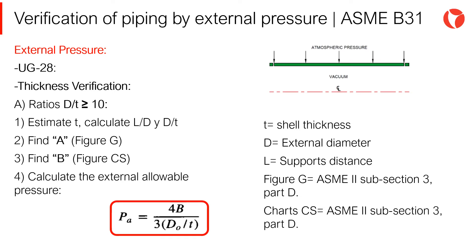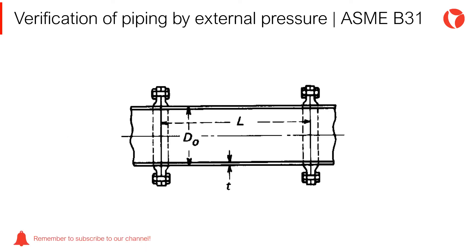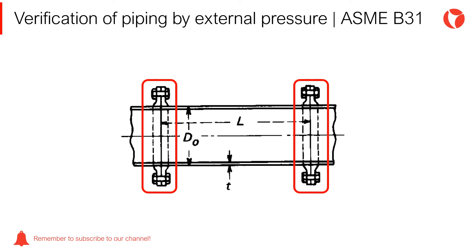When vessels are designed for both internal and external pressure, it is common practice to first obtain the shell thickness required for the internal pressure condition, and then check that thickness for the maximum allowable external pressure. In a piping system under external pressure, support lines are the parts of the system counteracting the actions of the external pressure. Depending on the geometry and moment of inertia of the system — meaning the different elements such as supports, flanges, etc. — these lines will be located in different places.